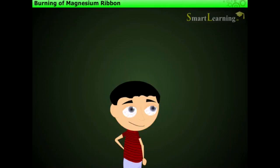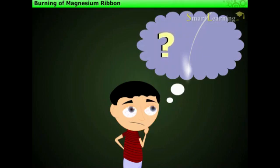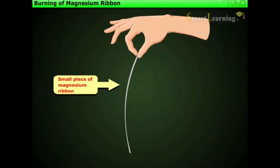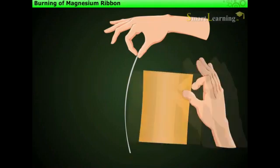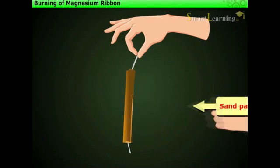Burning of magnesium ribbon. Let us perform an activity to understand how burning of magnesium ribbon is a chemical change. Let us take a small piece of magnesium ribbon and clean the tip with sand paper.